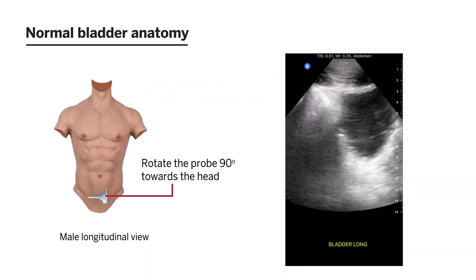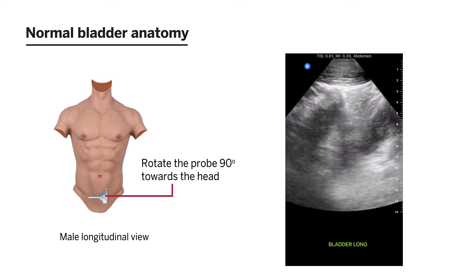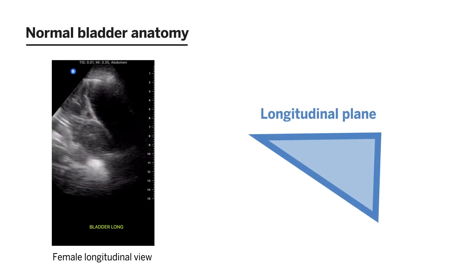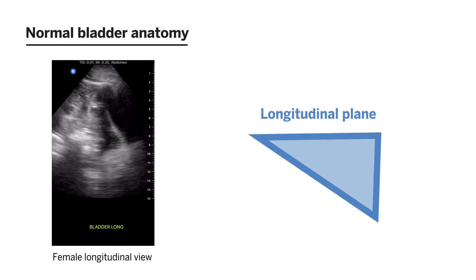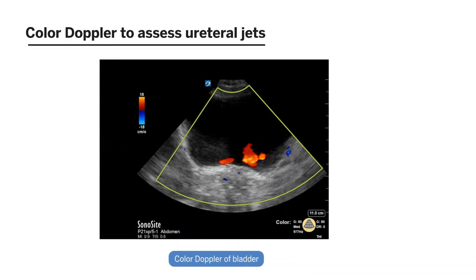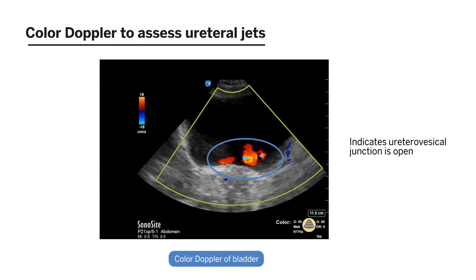Rotating the probe 90 degrees towards the head, you'll see the bladder now assumes a much more triangular structure. In a woman, we may see an isoechoic, bulbous structure in the deeper part of the image, which is the uterus. If you're patient and employ color Doppler angled in the right place, you can witness urine entering the bladder — these are known as ureteral jets. They represent that the ureterovesical junction is open. In the presence of an obstructing stone, you may only see one jet, making this diagnostically useful, not just visually interesting.